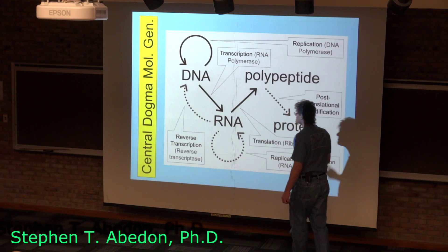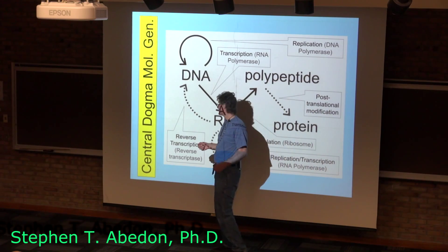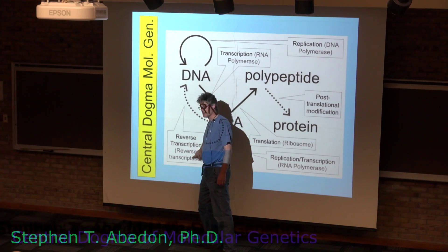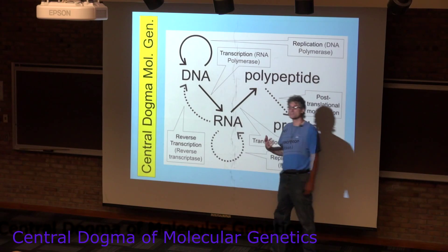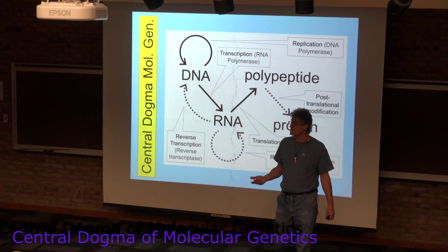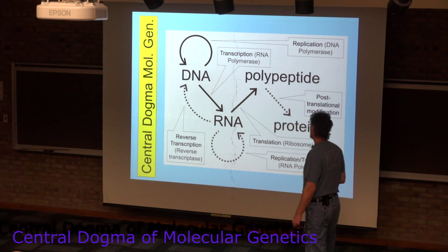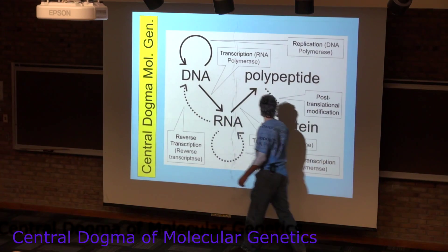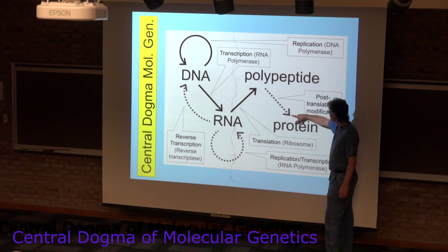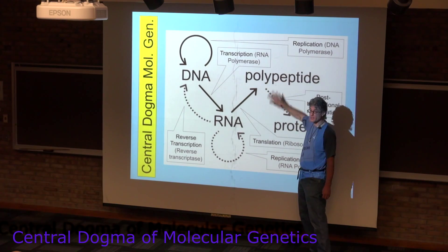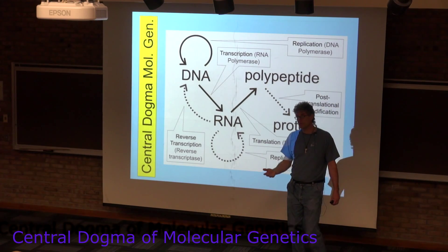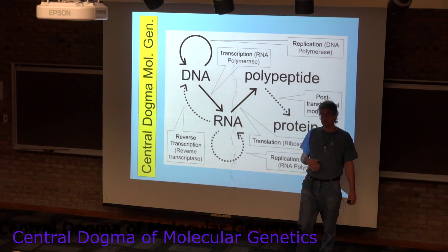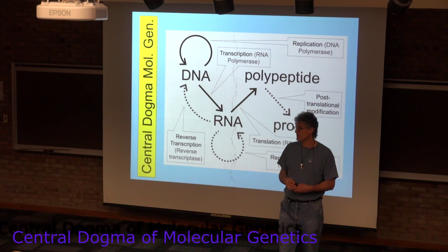There are additional things that aren't really part of the central dogma but are near to it. Reverse transcription is catalyzed by reverse transcriptase — you see this in retroviruses like the AIDS virus, where they go from having an RNA genome to a DNA genome. You also have post-translational modifications, where after you've made the polypeptide, a number of things go on afterwards that modify how the polypeptide contributes to phenotype.